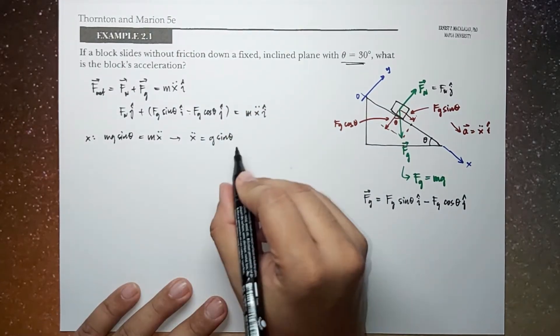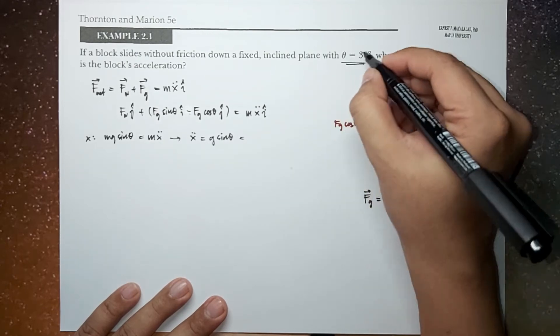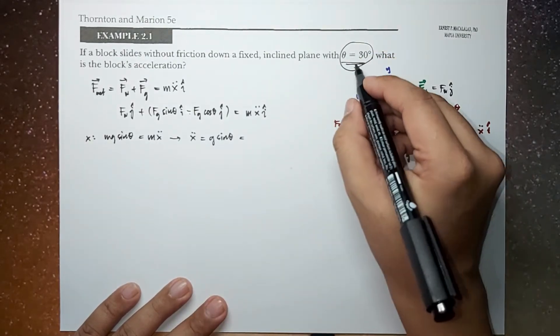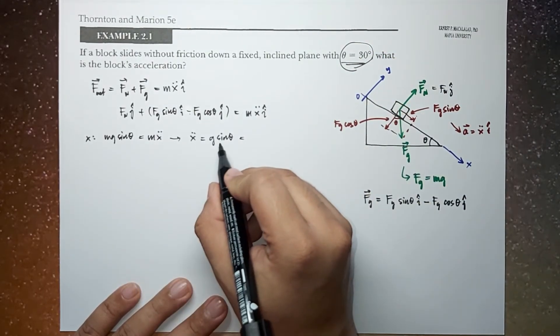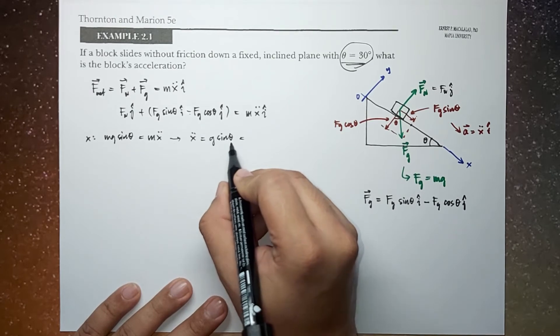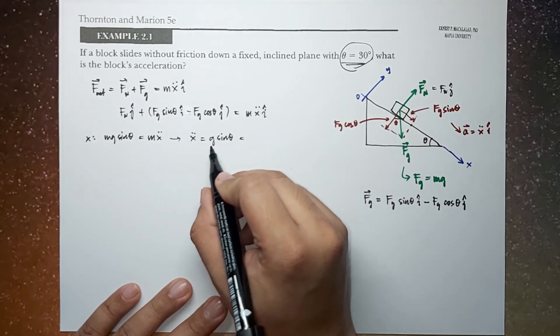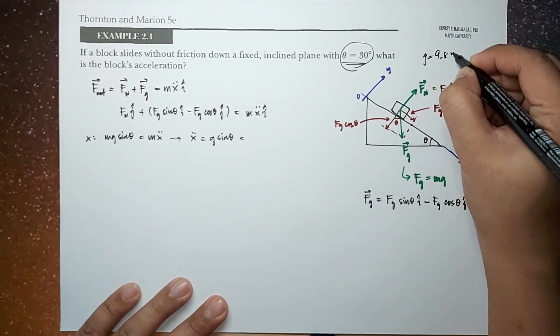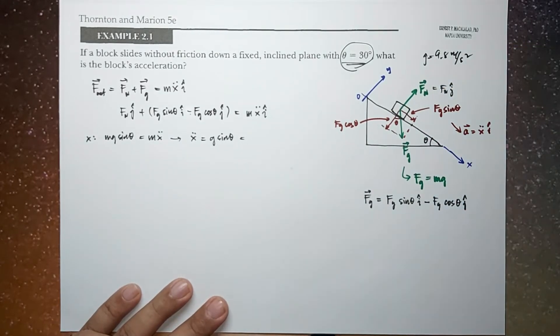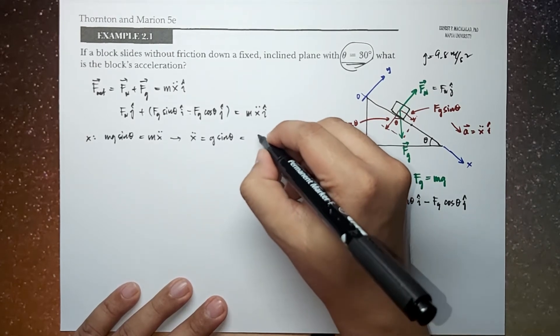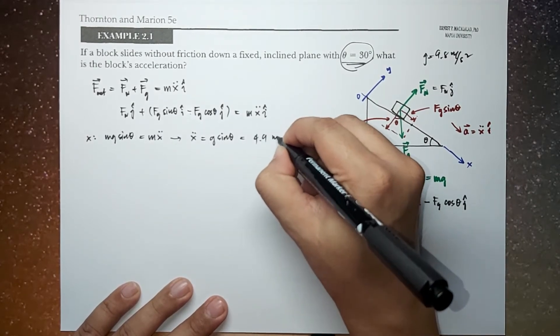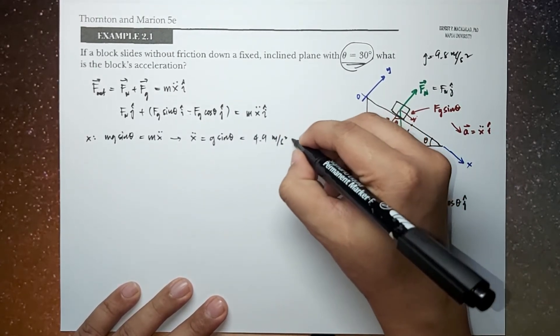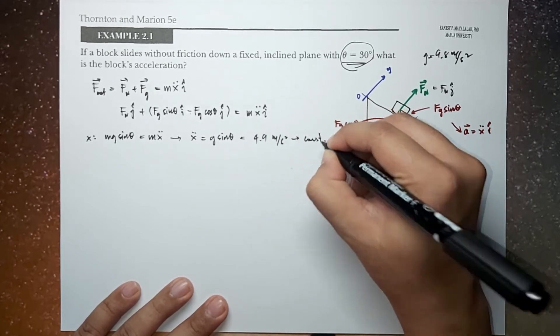From here, we can calculate from given theta equal 30 degrees. So this is 30 degrees, sin 30 degrees, that's 0.5. G is 9.8 meters per second squared. So this is now equal to 4.9 meters per second squared, which is a constant.